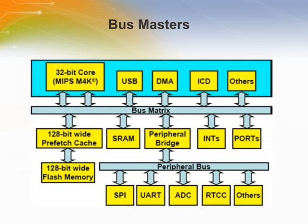The PIC32 architecture uses a concept called bus master modules. The bus masters are a special set of modules that can initiate a read or write transaction of other modules called targets. For example, the CPU can read and write to SRAM or any other peripheral. Similarly, the DMA can read and write to any other peripherals on the bus.